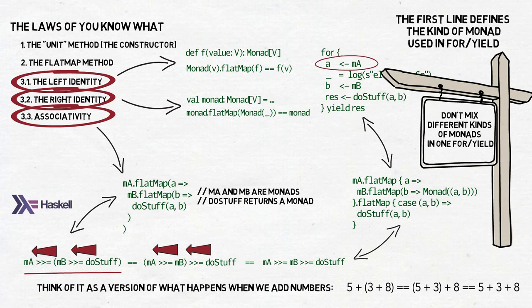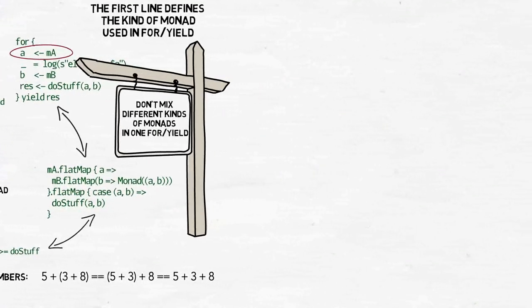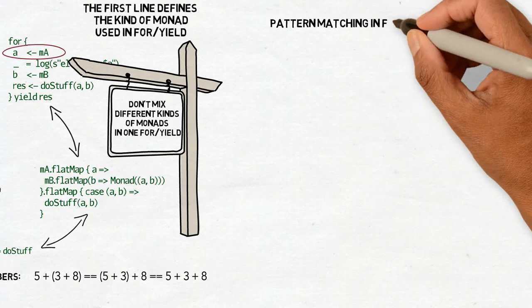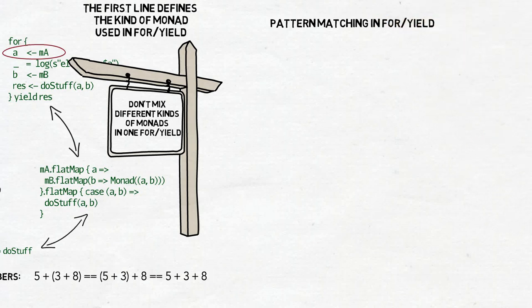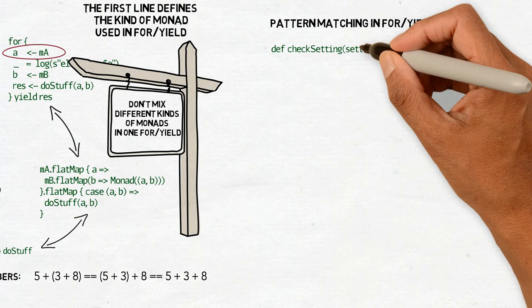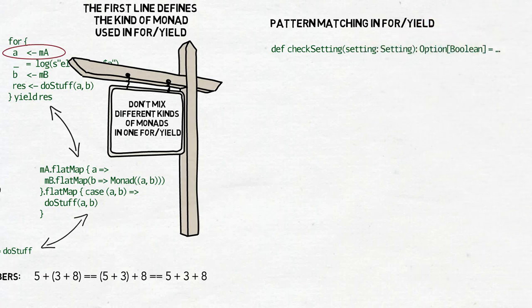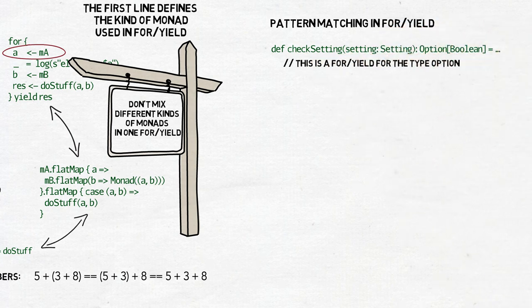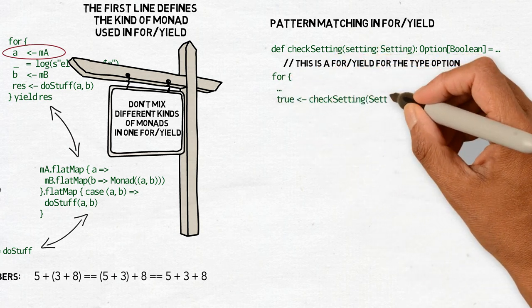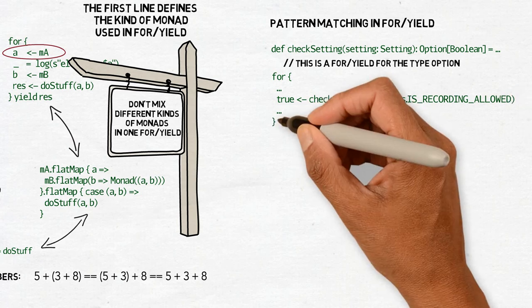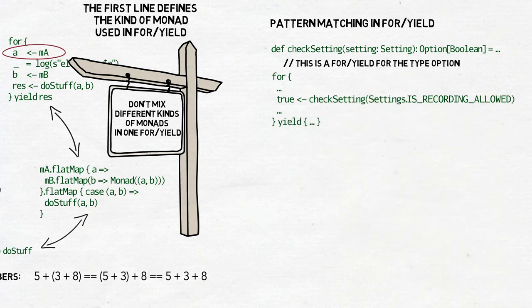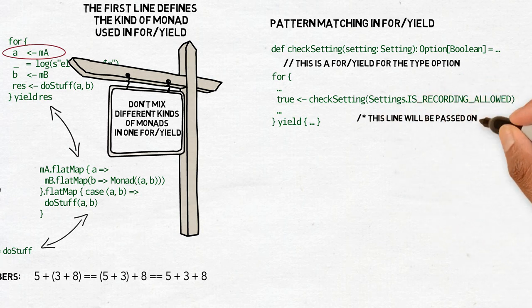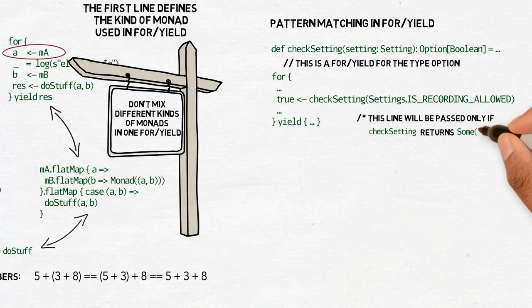It's also possible to do pattern matching on data returned by the left arrow and make further actions only if certain conditions are true. For example, you may have an option of boolean and want to go on with the for-yield only if it contains true. Let's say we have the checkSetting method that will give us the option of boolean and we check a setting constant is recording allowed. The line true will be passed only if checkSetting returns some of true. If it returns some of false or none, the rest of for-yield will be skipped.